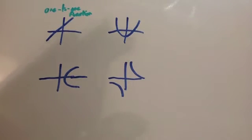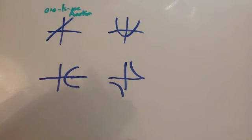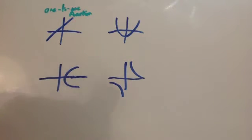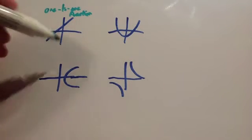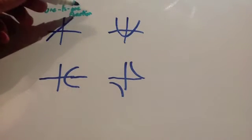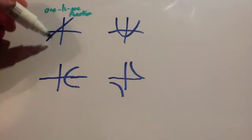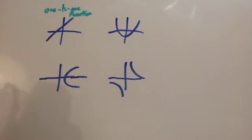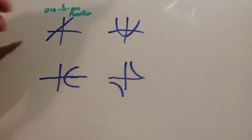Any straight line graph would be a one-to-one function, as long as there aren't any asymptotes. Something like an x-cubed graph would also be a one-to-one function. It does have a point of inflection and it comes up and then up again, but every single value you put in gives a unique output — a unique value of the range.